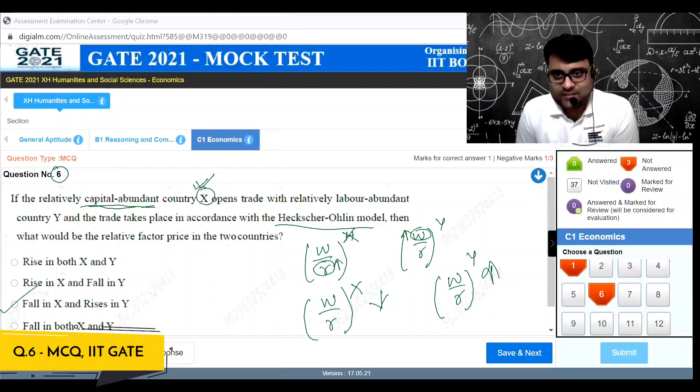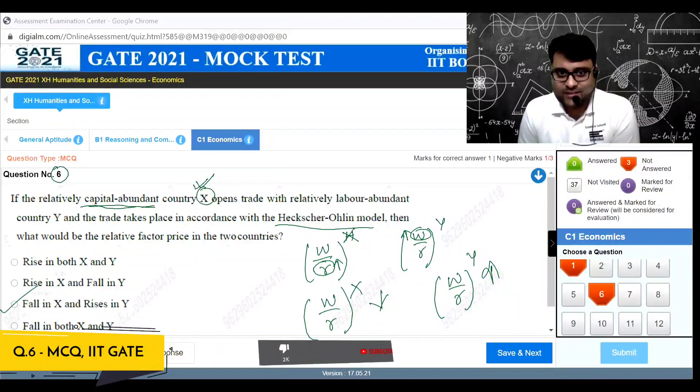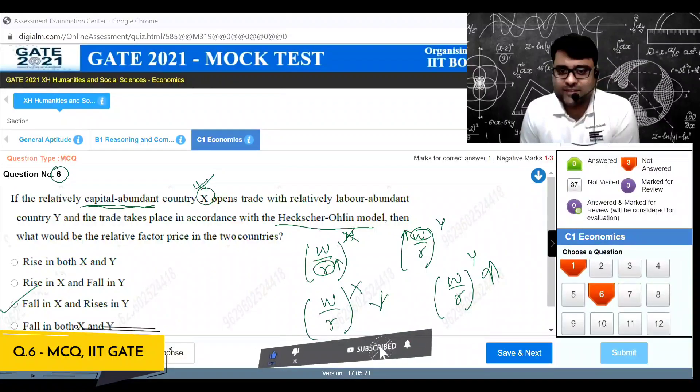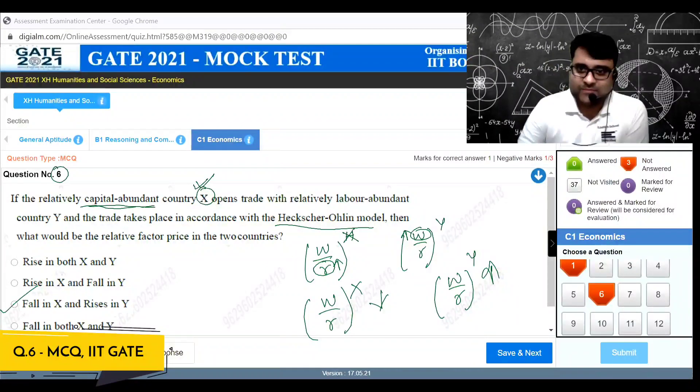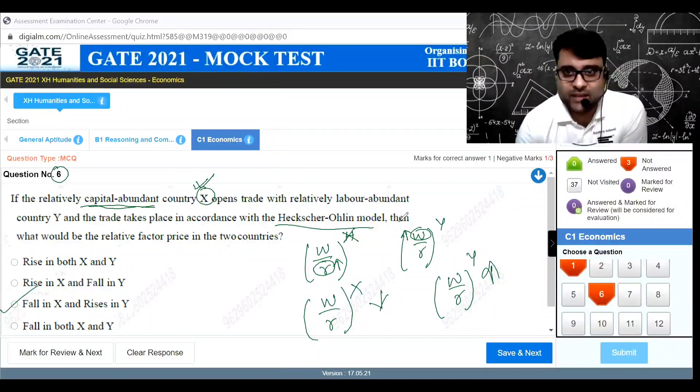If I export the capital intensive good, obviously the capital intensive factor will gain, therefore the rent will increase for country X. The rental rate will increase for country X and w will increase for country Y. Answer is C.